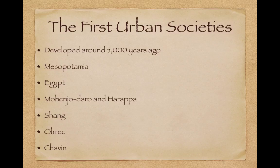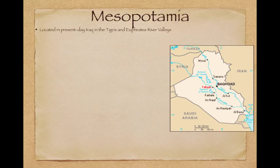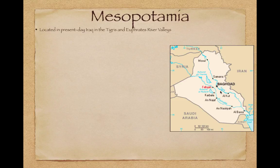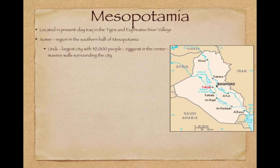These are the six urban societies you should be familiar with. Let's begin with Mesopotamia, located in present-day Iraq in the Tigris and Euphrates rivers. Mesopotamia means 'between these rivers,' and this is where we find the first civilizations in this region. Sumer is a region in the southern half of Mesopotamia, and Uruk is the largest city with 50,000 people.